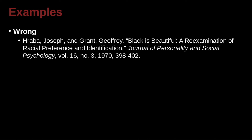We have another example: Prava, Joseph, and Grant — all three. 'Black is Beautiful: A Reexamination of Racial Preferences and Identification,' inside the Journal of Personality and Social Psychology. We have a volume number, an issue number, a year, and the page numbers. Here we've got some problems we can see very clearly.